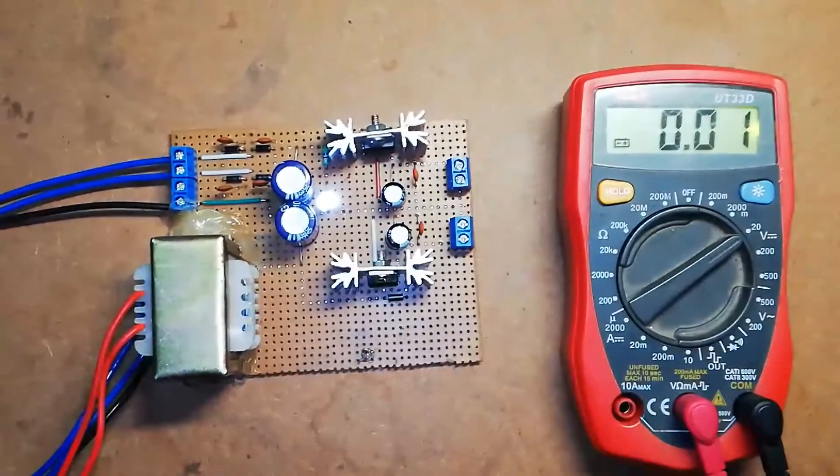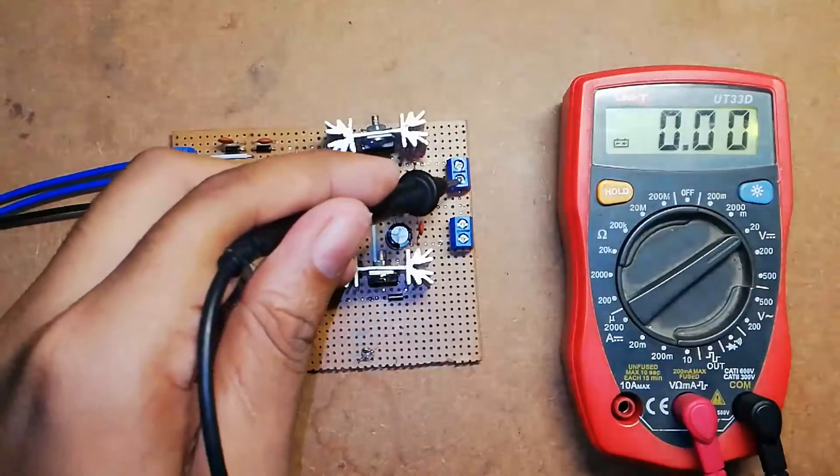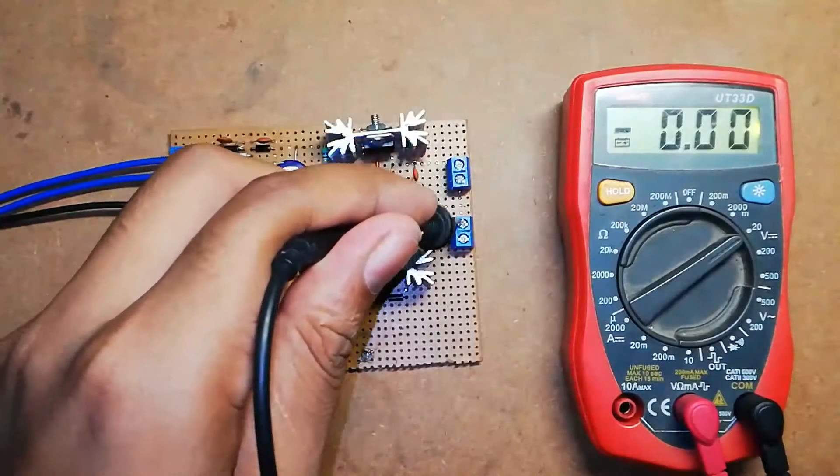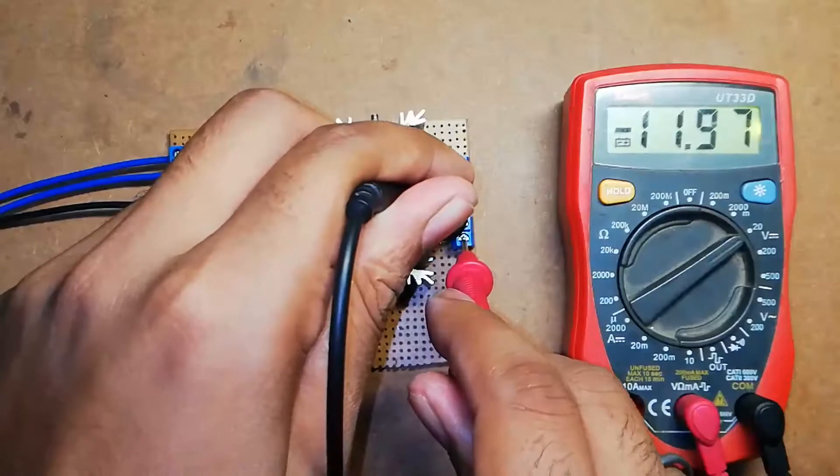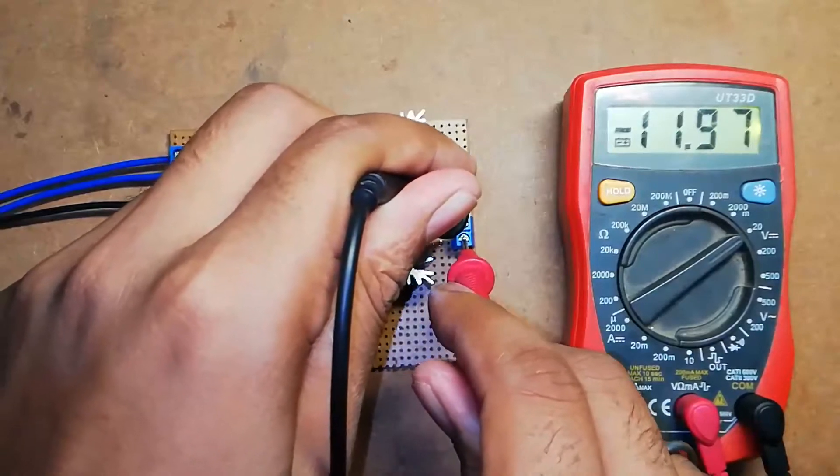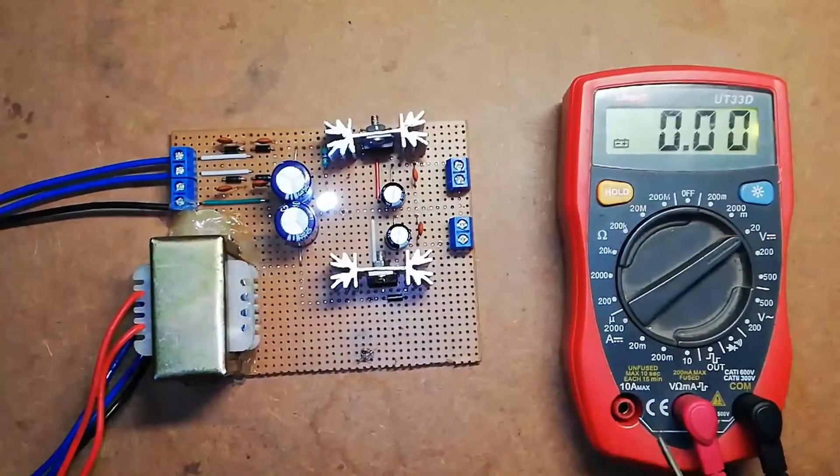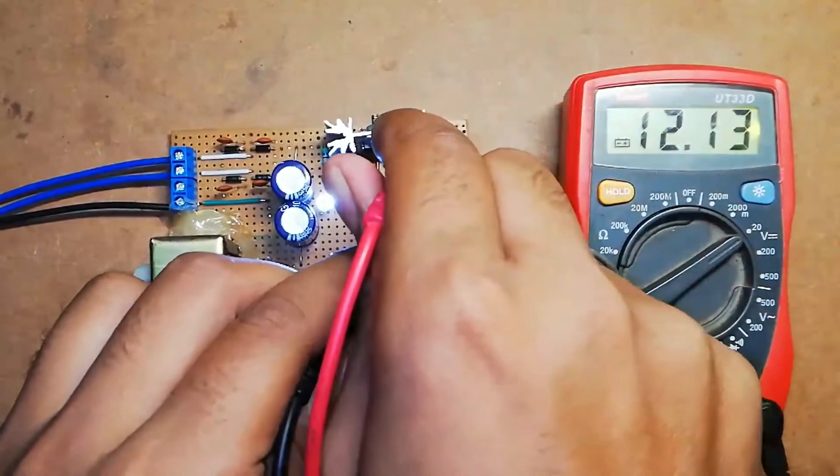Similarly, now let's measure negative supply. As I already mentioned, this pin and this pin are shorted for ground. Now let's measure. It shows minus 11.97 volts, which extends to 12 volts. In this way you can make your own 12 volt dual polarity noise-free power supply.